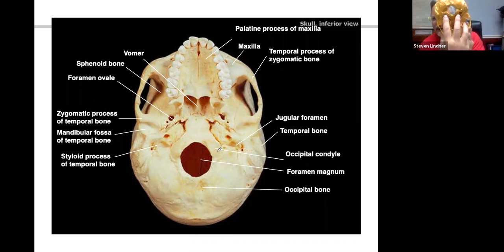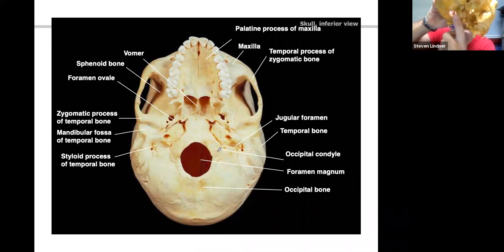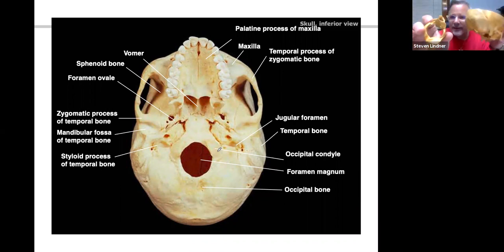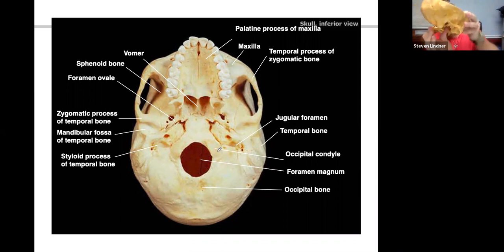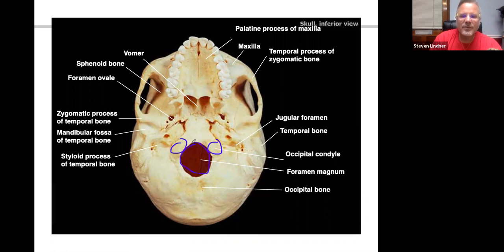The occipital condyles are rounded and contoured — a perfect condylar shape to articulate with the top of the atlas vertebra, allowing for nodding of the skull. One occipital condyle is on each side of the foramen magnum. The foramen magnum is where the medulla oblongata travels through. The small hole nearby is the jugular foramen — we'll go through all the foramina and understand what cranial nerves and structures pass through.